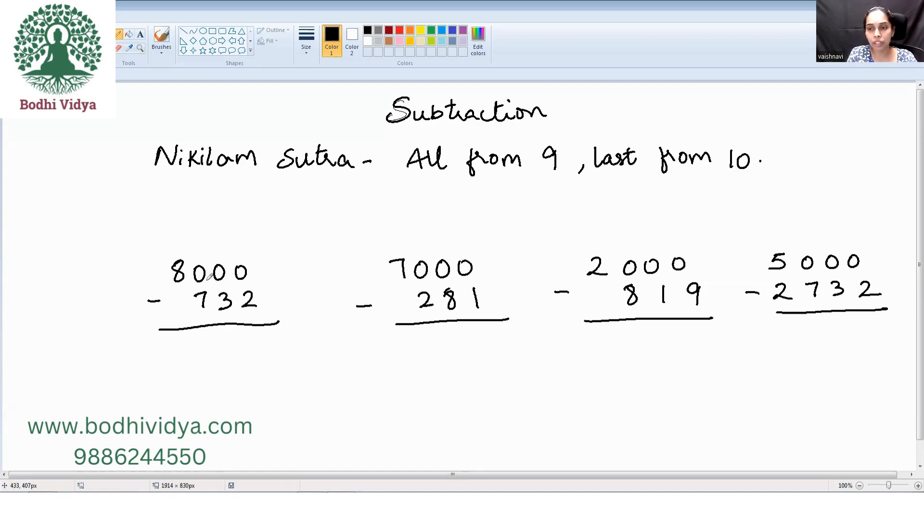Which means whenever we need to subtract these numbers, whenever we have zeros of such sort, it is all from 9 last from 10. 10 minus 2 is 8, 9 minus 3 is 6, 9 minus 7 is 2, and to get this number.